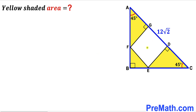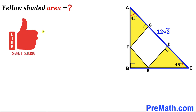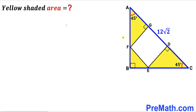Welcome to pre-math. In this video we have a white square DEFG fully inscribed in a blue right triangle ABC, as shown in the diagram. The hypotenuse AC of this blue right triangle is 12 times square root of 2 units, and both base angles are 45 degrees. Our task is to calculate the area of the yellow shaded region. Please don't forget to give a thumbs up and subscribe. Note that this figure may not be 100% true to scale.